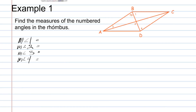In Example 1, we're asked to find the measures of angles in a rhombus. We've seen two theorems about rhombuses: first, each diagonal of a rhombus bisects two angles of the rhombus; second, the diagonals of a rhombus are perpendicular. Keeping those in mind, let's attack this problem. To find the measure of angle 1, it's next to an angle marked 79 degrees. Since the diagonals of a rhombus bisect those angles, the measure of angle 1 is going to be 79 degrees. Using the theorem that the diagonals of a rhombus are perpendicular, the measure of angle 2 is going to be 90 degrees.